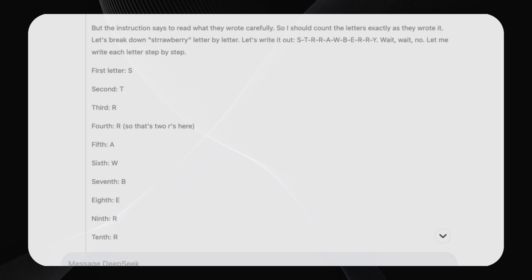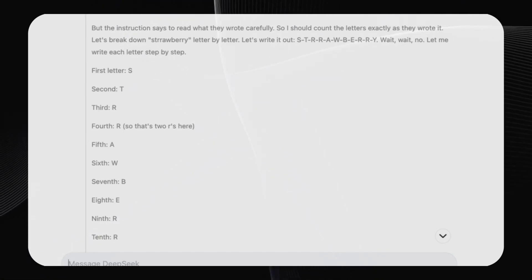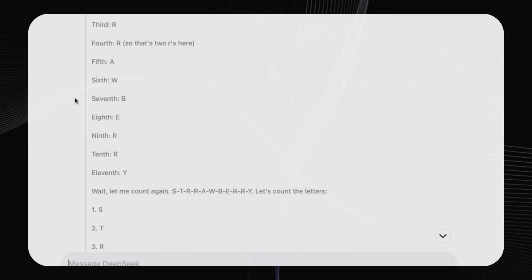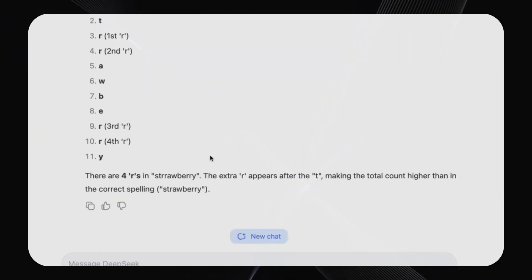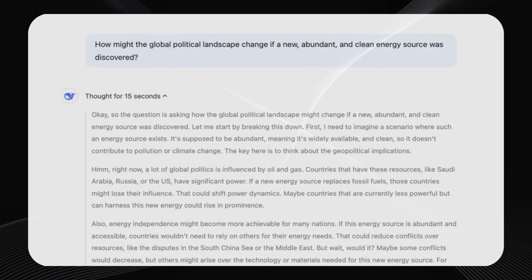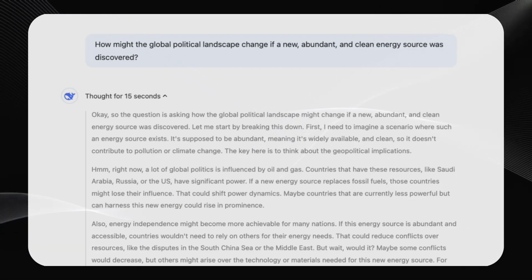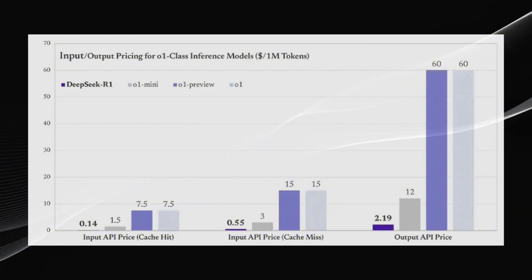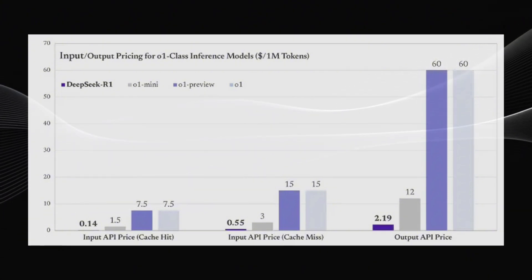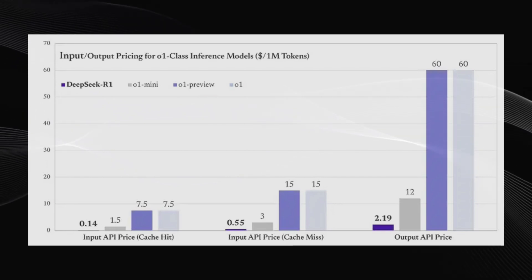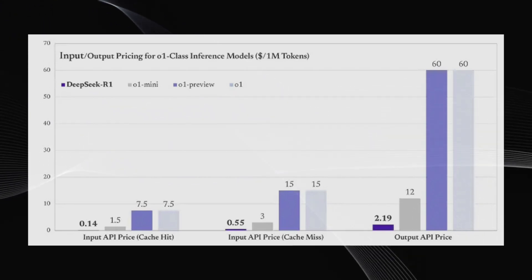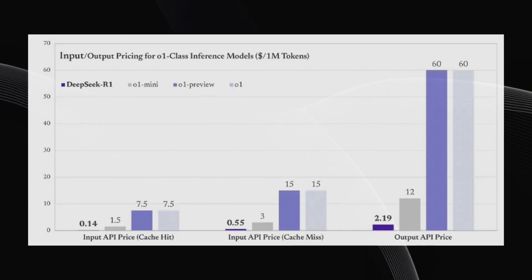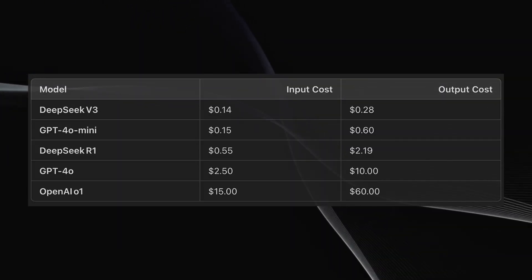This transparency not only makes the model's ability clearer to us, but also makes it much easier to notice and fix any problems with its reasoning. Also, DeepSeek R1 has been engineered for efficiency. It is based on a Mixture of Experts (MoE) framework that turns on only a subset of its parameters at each input, which saves on computations. DeepSeek R1 is approximately 25 to 30 times cheaper per million input tokens than O1. This cost efficiency, along with distilled models, makes DeepSeek R1 appealing for applications from research to industry.